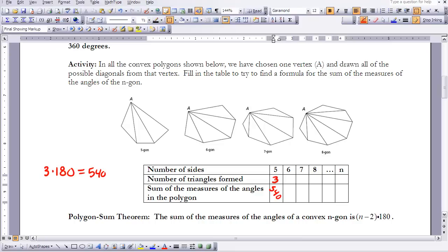Let's take a look at the 6-gon. We have 1, 2, 3, 4 triangles formed, so that's going to be 4 times 180, which equals 720. What I'd like you to do now is finish the last two and hypothesize what the n-column would look like.